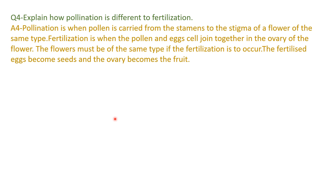How does pollination help the plant to reproduce? Pollination brings the male pollen to the female carpel or the stigma so that fertilization can take place to form seeds. What is the difference between pollination and fertilization? Pollination is when pollen is carried from the stamens — that is the anther which contains pollen — to the stigma of a flower of the same type. Fertilization is when pollen and egg cell join together in the ovary of the flower. The flower must be of the same type for fertilization to occur. The fertilized egg becomes seeds and the ovary becomes fruit.